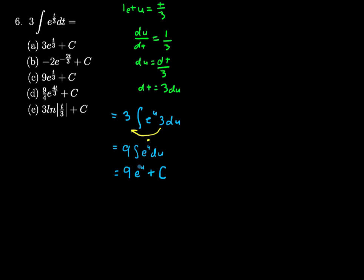One more thing to do. Our original problem had t's in it, but our answer has u's in it. We need to go back to writing this in terms of t. I can replace the u, substitute t over three in for u since u equals t over three. I get my answer is 9e to the t over three plus C. And that is answer choice C right here.